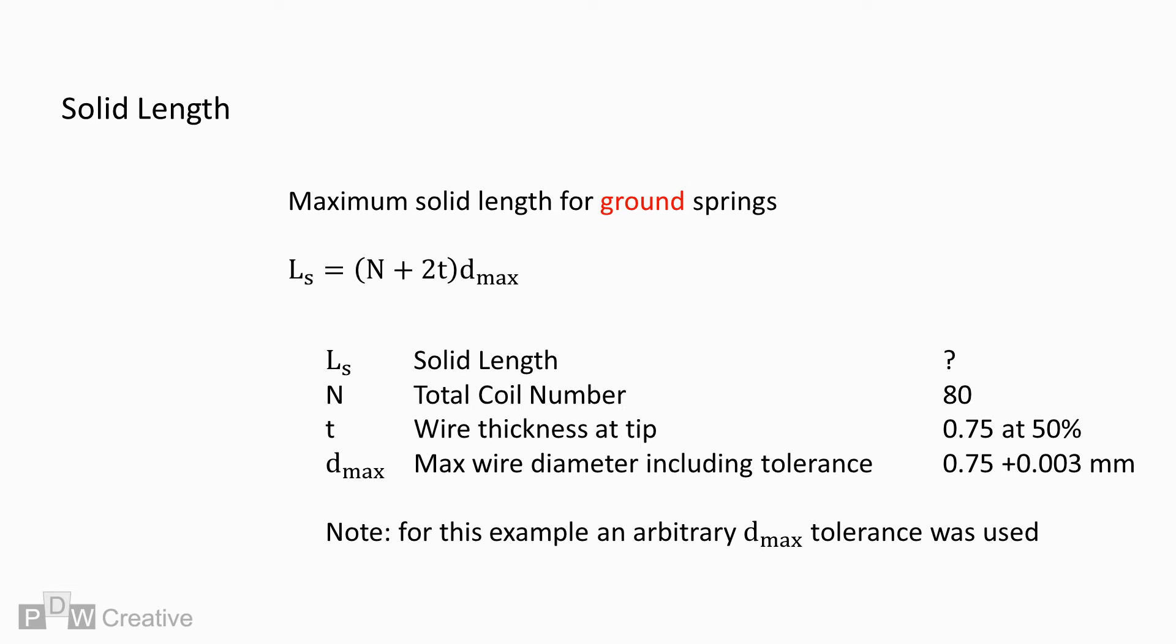The solid length is a product of the number of coils, wire thickness, diameter and diameter tolerance. It is also governed by the end type.